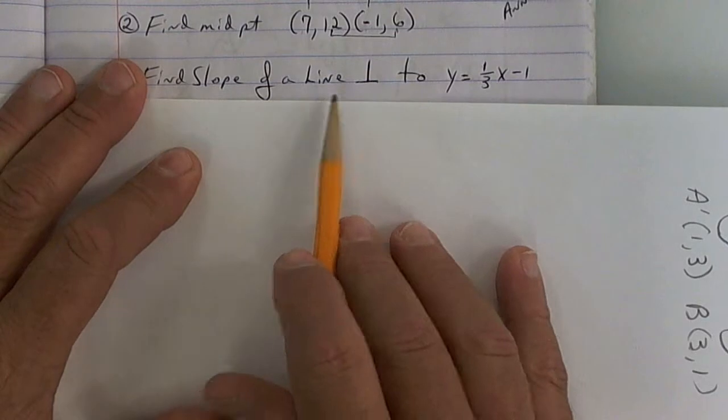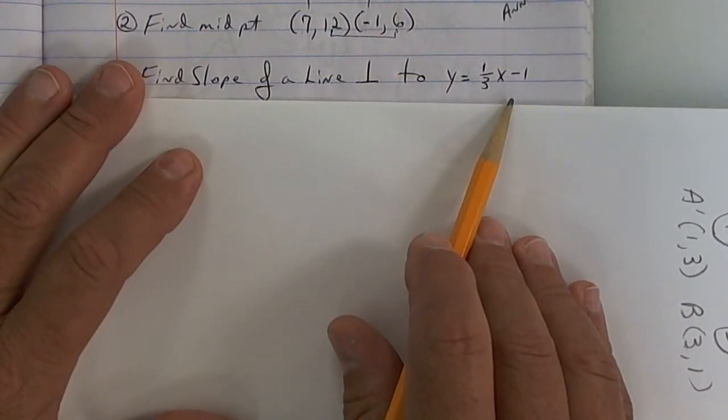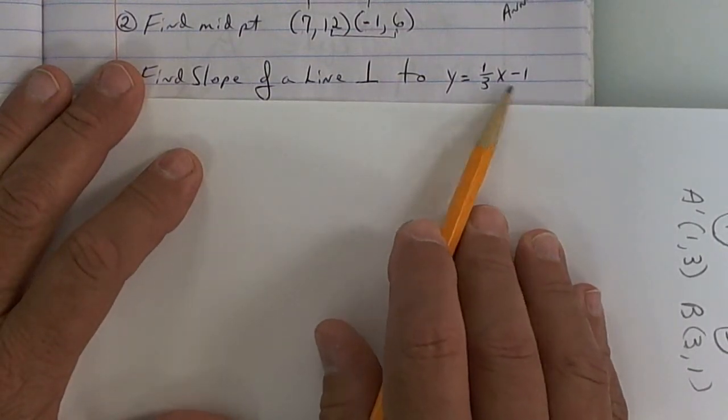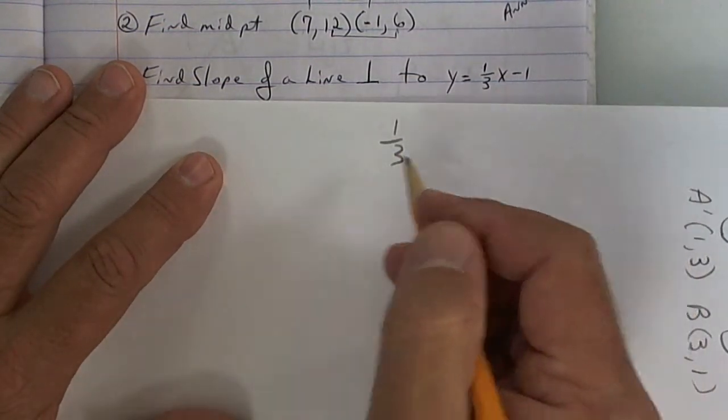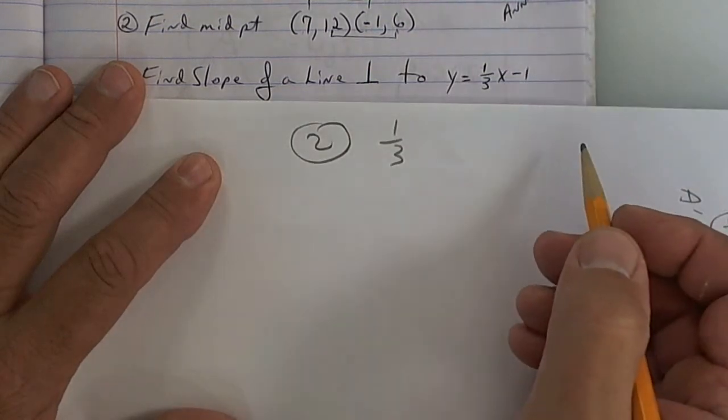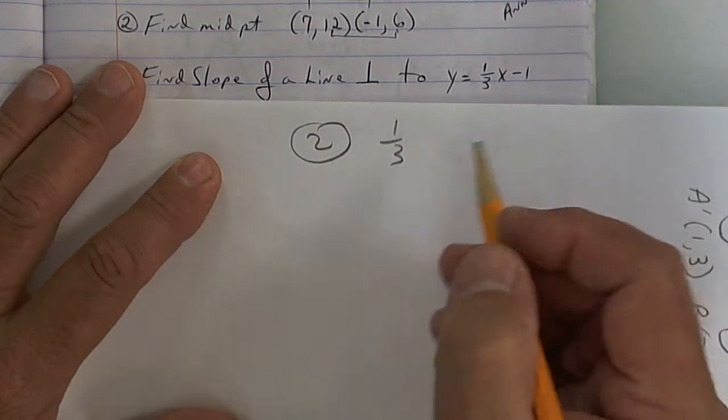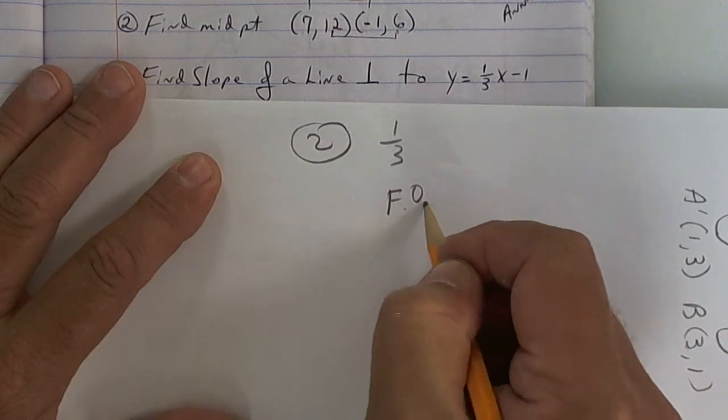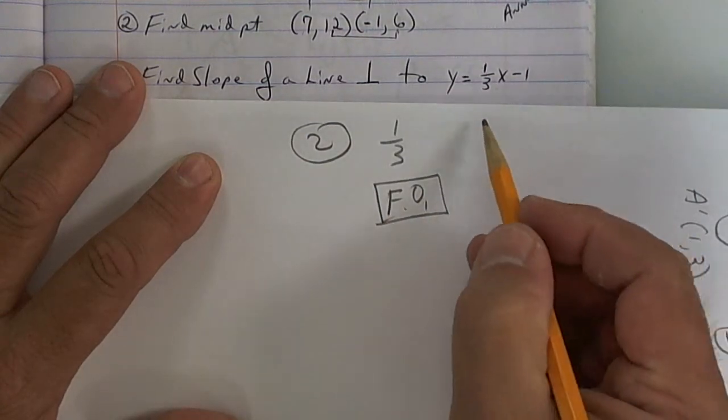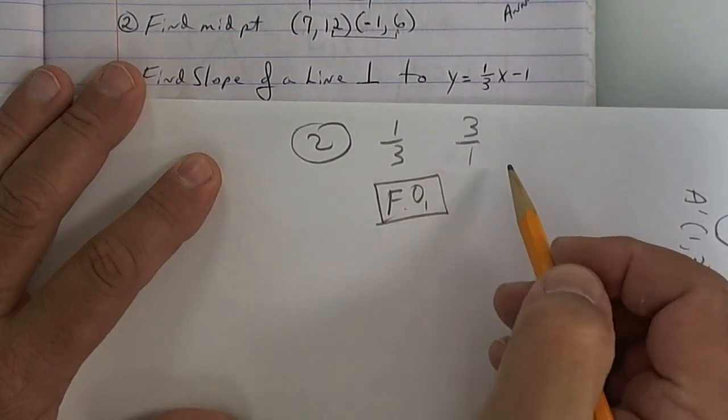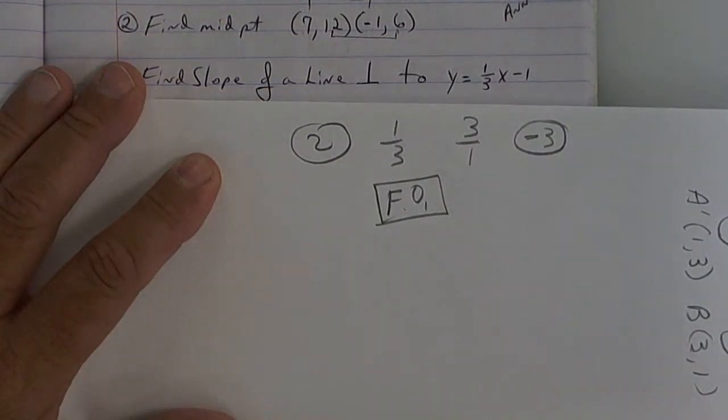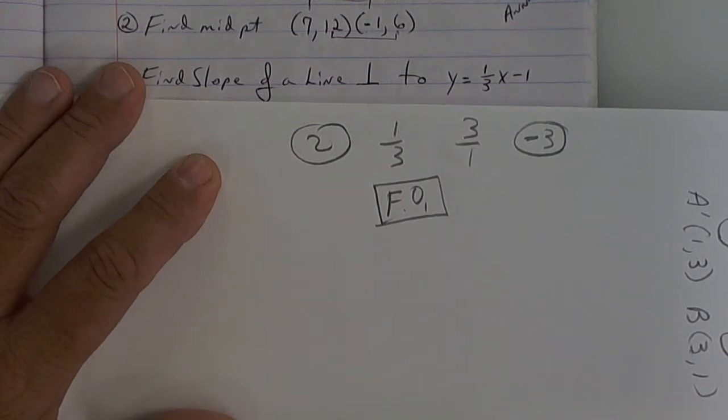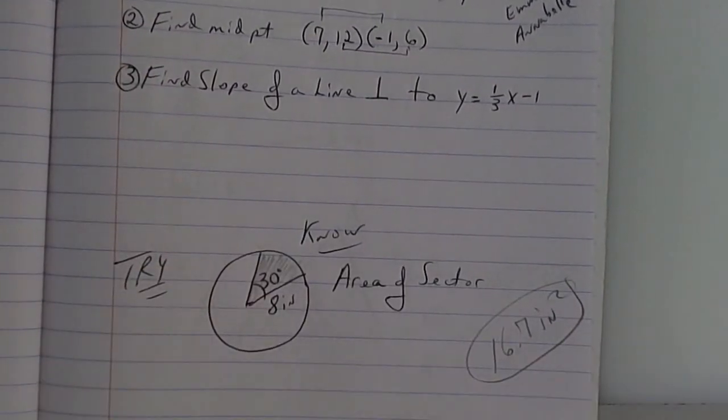All right. Perpendicular. Which one of these is my slope? Does anybody know which one is my slope? Is it the 1? Is it the x? What is it? It's the 1 third. But to get perpendicular, you've got to do two things. What's the first thing I do? You've got to flip it, and you've got to write the opposite. This is the answer. Any questions on how to do perpendicular? The book says negative reciprocal. Same thing. All right. Put away your bell work.